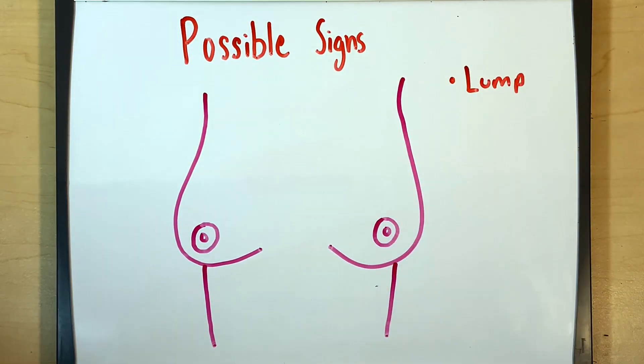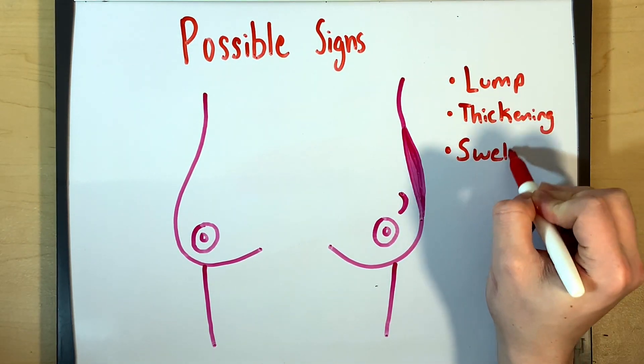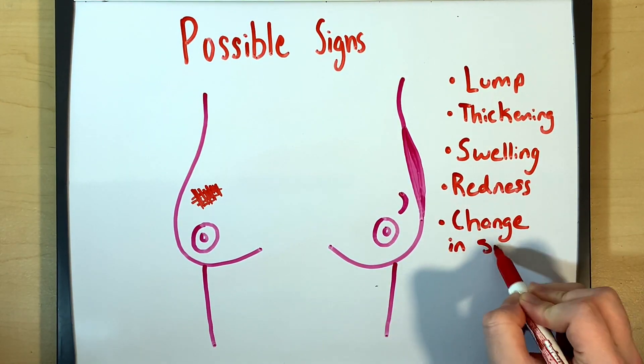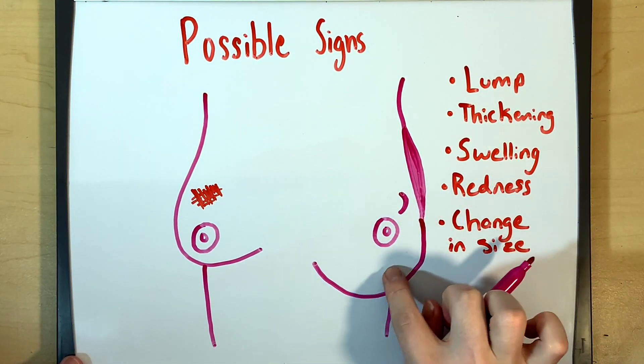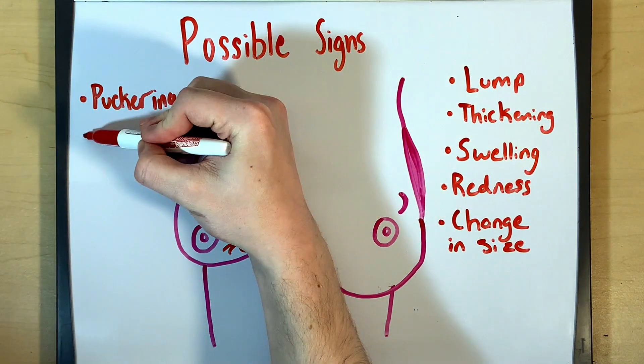Possible signs of breast cancer include a lump, a thickening inside the breast or the underarm, swelling, warmth, or redness or darkening of the skin, sudden change in shape or size of the breast, dimpling or puckering of the skin.